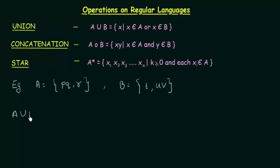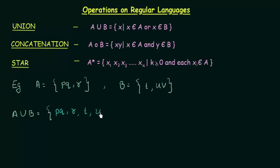A Union B — what would this be? As we saw in the definition, it is X such that X belongs to A or X belongs to B, which basically means everything from A and B. Just put all elements from A and B together. From A we have P, Q, and R; from B we have T, U, and V. So A Union B equals {P, Q, R, T, U, V}. That is the Union operation — everything from set A and set B put together.